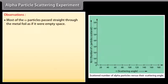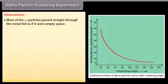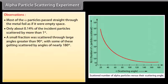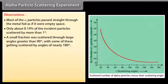Most of the alpha particles passed straight through the metal foil as if it were empty space. Only about 0.14% of the incident particles were scattered by more than 1 degree. A small fraction were scattered through large angles greater than 90 degrees, with some getting scattered by angles of nearly 180 degrees.